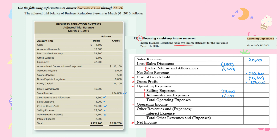Now subtract operating expenses: Selling Expenses of $27,600 plus Admin Expenses of $14,600 equals total operating expenses of $42,200. Gross Profit of $137,000 less $42,200 gives Operating Income of $94,800. Then subtract Interest Expense of $2,000. There are no other revenues or expenses, so Net Income is $92,800. We can verify: Gross Profit is $137,000 — confirmed.